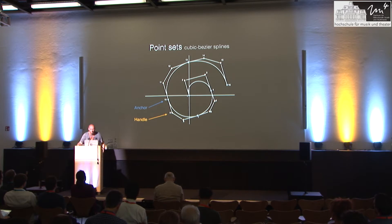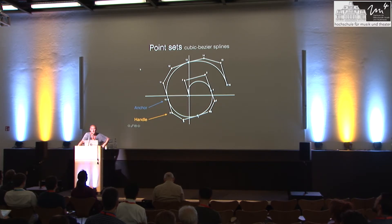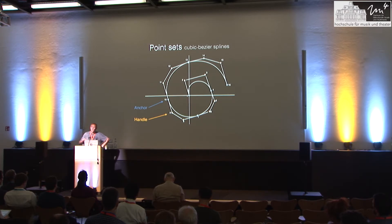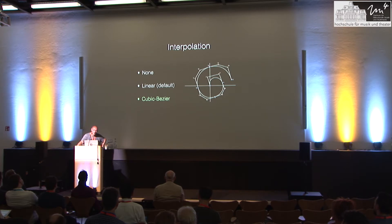Looking at point sets, the idea is a bundle of points used to describe trajectories. We're using cubic Bezier splines for interpolation, meaning there are two different kinds of points: the anchor points — the points actually on the curve — and the handle points that describe the curvature when interpolating. The interpolation extension already existed for simple linear interpolations on the fifth layer, and now we're extending it with cubic Bezier splines.